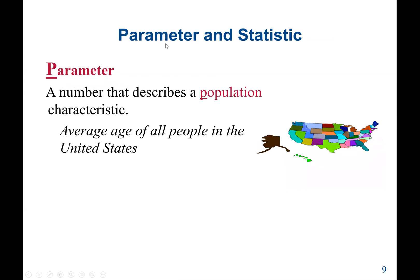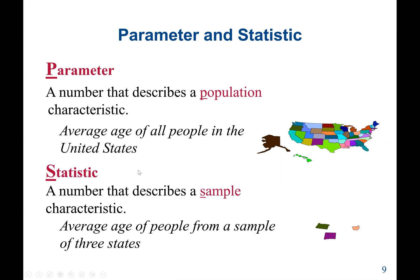What is the difference between parameter and statistics? A parameter describes a characteristic of the population — it is the number that describes a population's characteristics. For example, the average age of all people in the United States. A statistic describes a characteristic of a sample. For example, the average age of people from a sample of three states. So parameter is the characteristic of the population, and statistics is the characteristic of the sample.